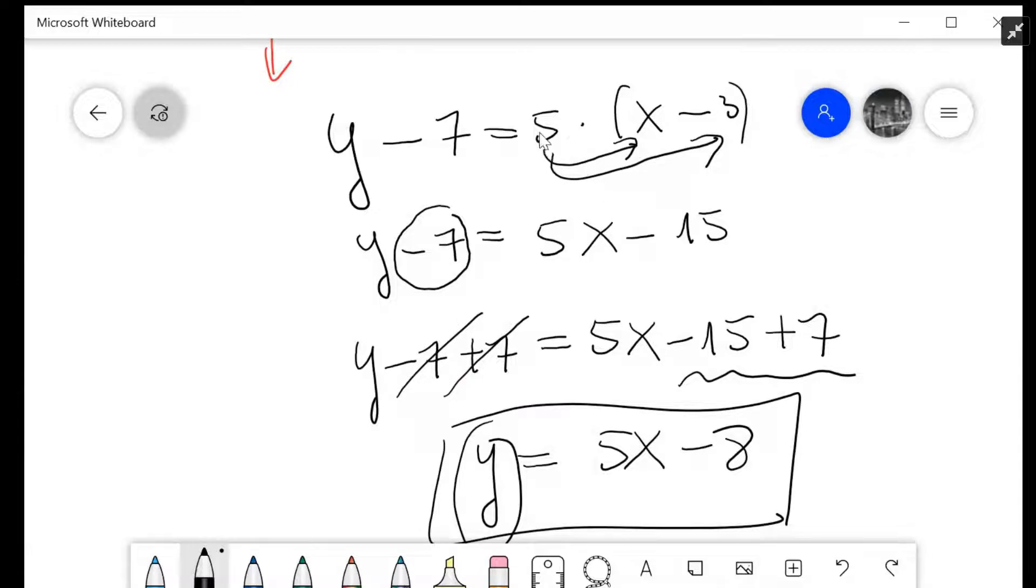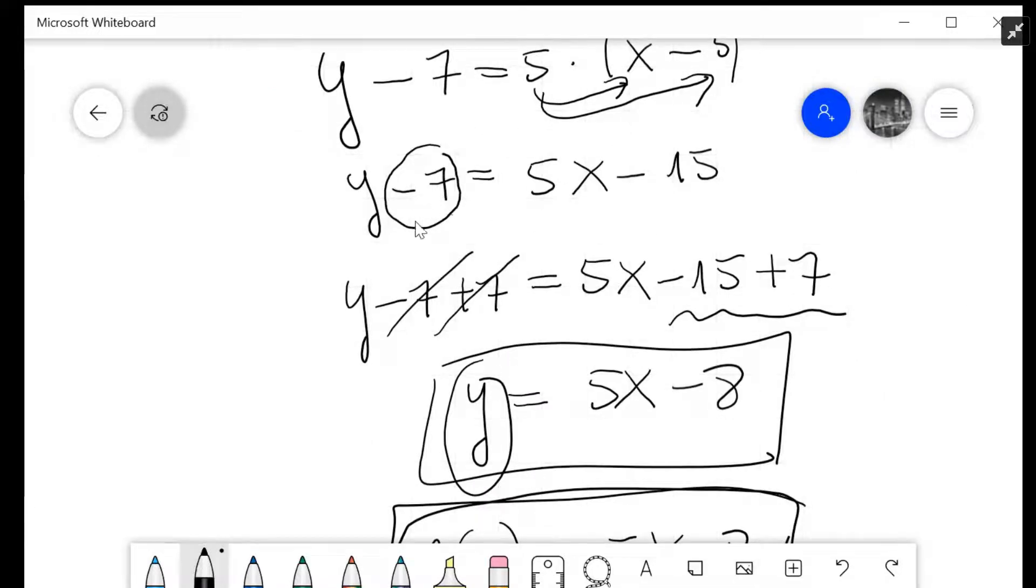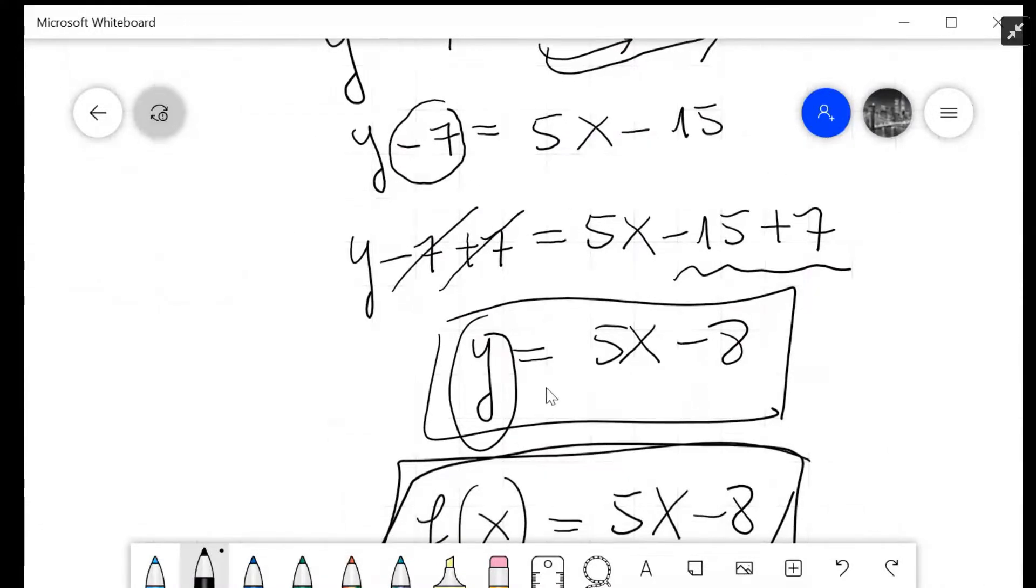5 times x is 5x, minus 5 times 3 is 15, giving us y - 7 = 5x - 15. We want y by itself, so we add 7 to both sides, giving us y = 5x - 8.